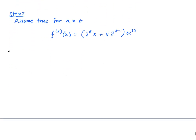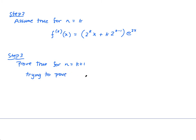Step 3: prove true for n equals k+1. What are we trying to show? We're trying to prove that the (k+1)th derivative f_(k+1)(x) is equal to — subbing k+1 in place of n — 2^(k+1) · x plus (k+1) times 2^(k+1−1), which is 2^k, times e^(2x). That's what I'm trying to show.